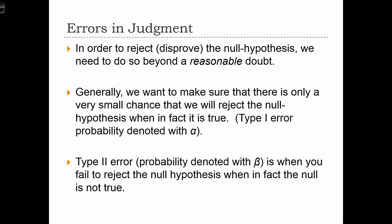Generally, we want to make sure that there's only a very small chance that we will reject the null hypothesis when, in fact, the null hypothesis is true. This is considered type 1 error, and we're going to denote the probability of committing a type 1 error with the Greek letter alpha. This is also called the significance level.